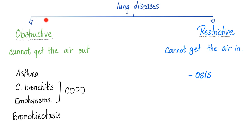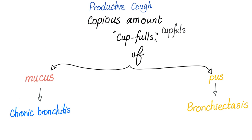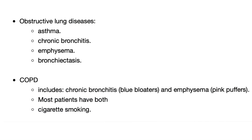We divide lung disease into obstructive and restrictive. Obstructive — the patient can't get the air out. In restrictive, the patient can't get the air in. The question will describe a patient with a productive cough — copious amounts, cup fulls, tons of mucus or pus. Tons of mucus is chronic bronchitis; tons of pus is bronchiectasis. If this is a kid, this is usually cystic fibrosis. Obstructive lung diseases include asthma, chronic bronchitis, emphysema, and bronchiectasis.